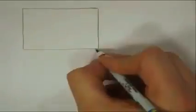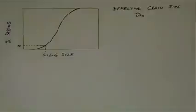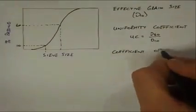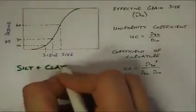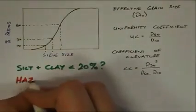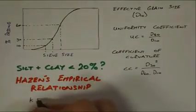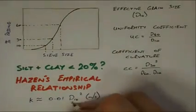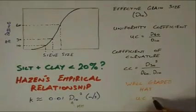The particle distribution curve is also used to determine the effective grain size D10, the uniformity coefficient, and the coefficient of curvature, as shown. These are useful parameters in system decision-making. For example, in soils having less than 20% silt and clay-sized particles, permeability K can be estimated using Hazen's empirical relationship, where D10 is input in millimetres. We can also tell if the soil is well graded from its uniformity coefficient.